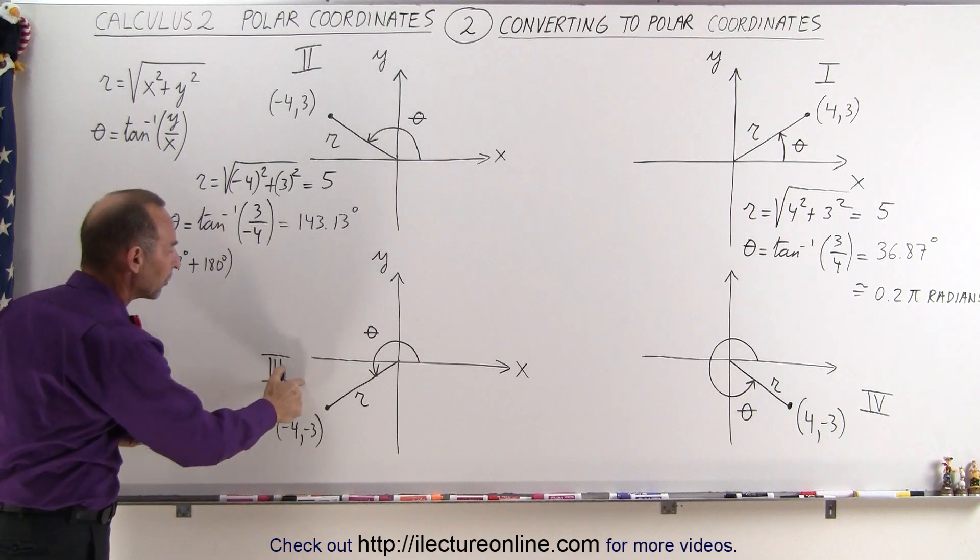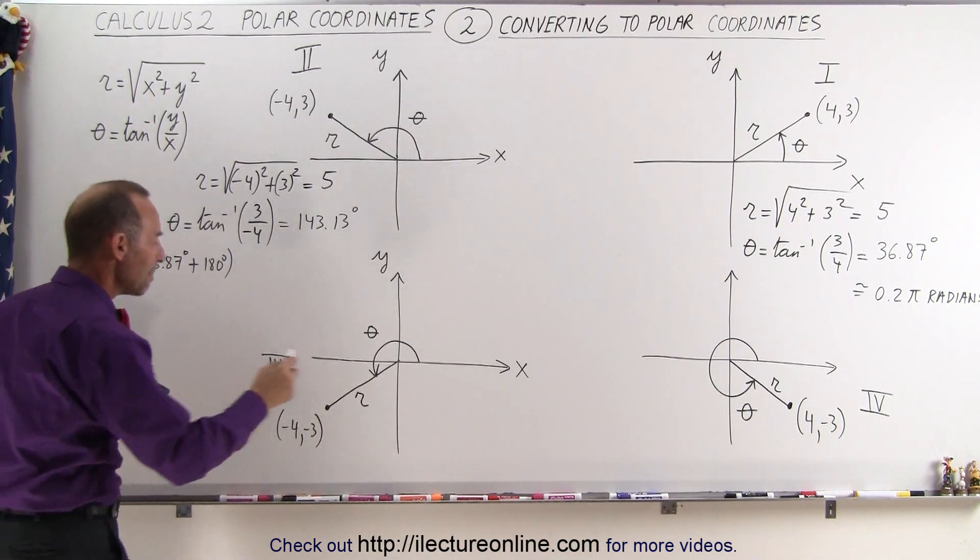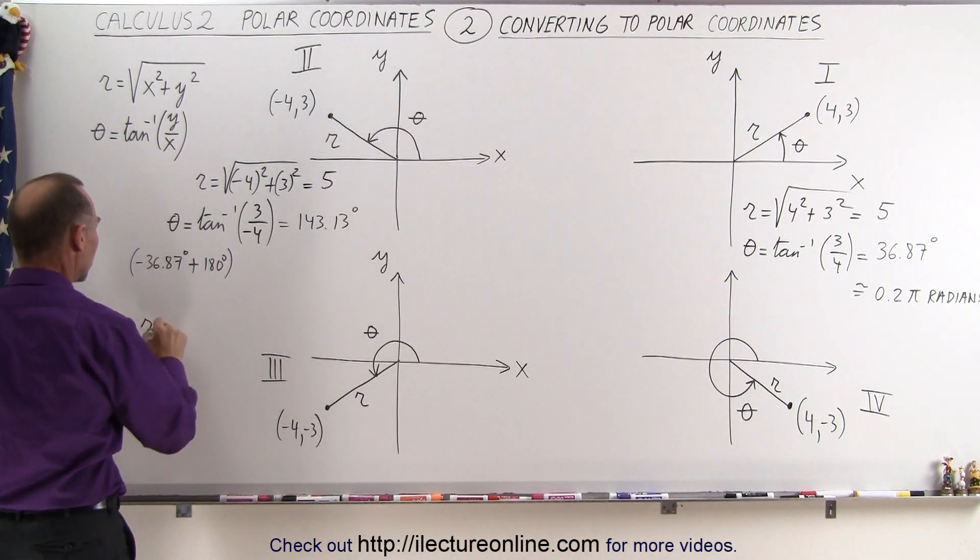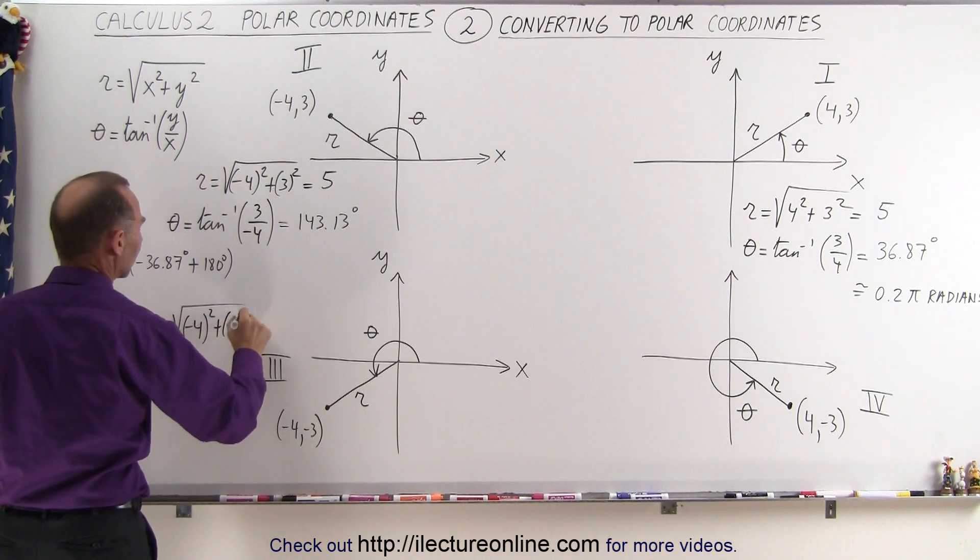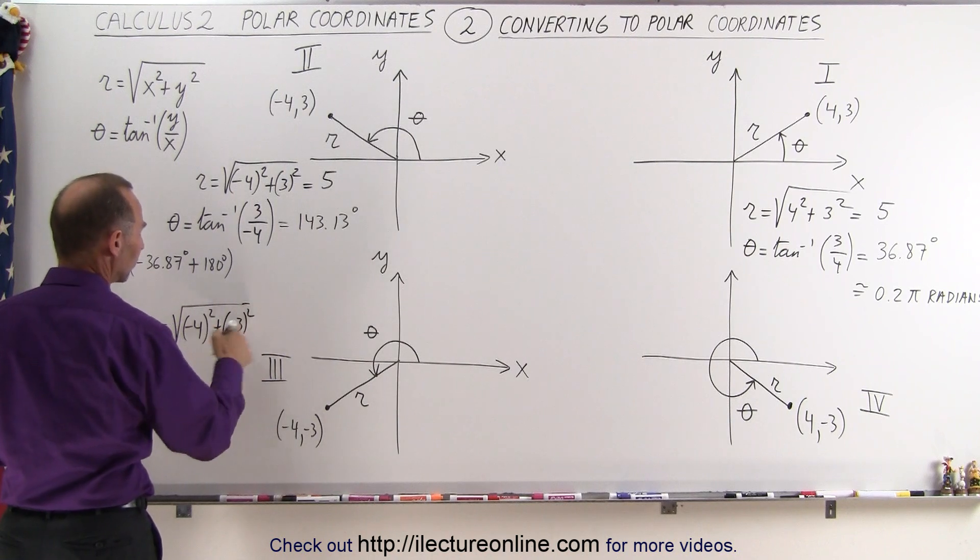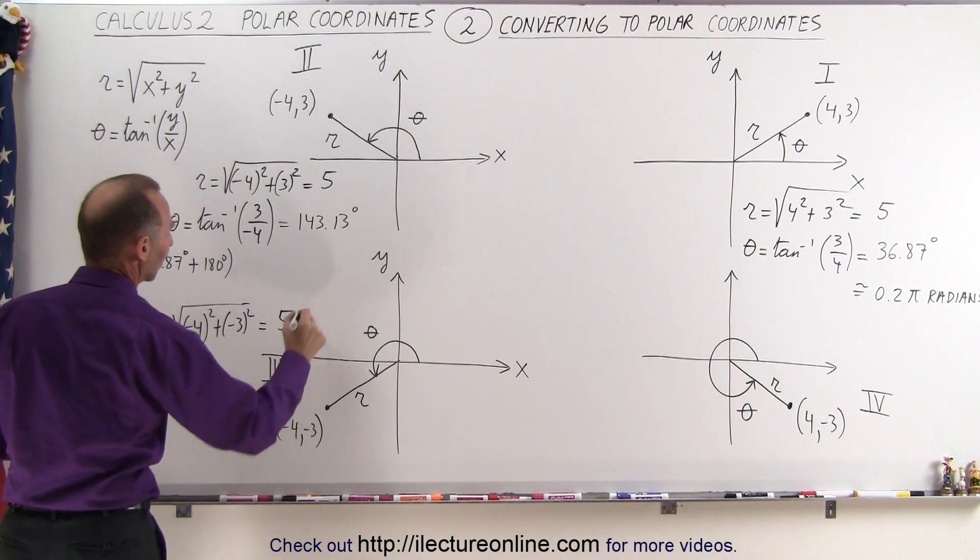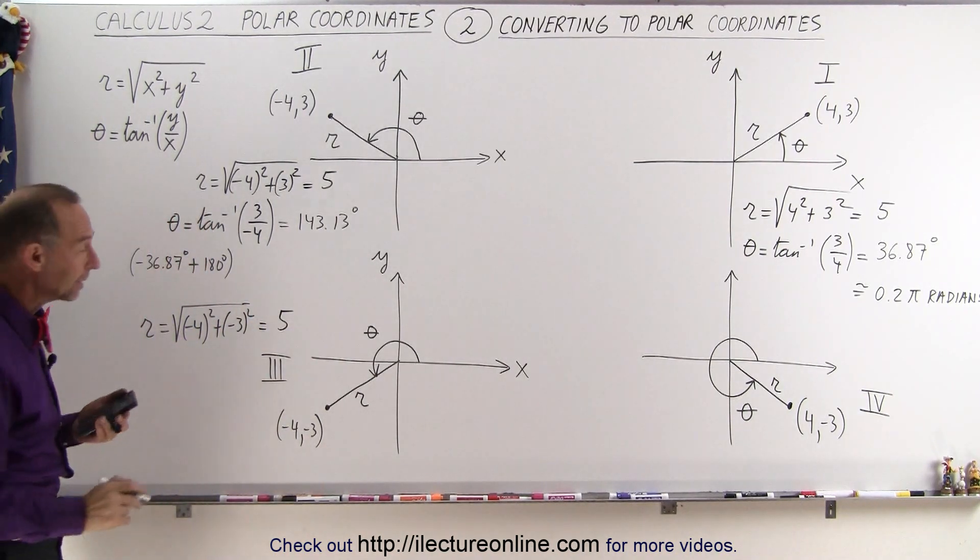Now we go to quadrant 3. Again, to get the magnitude r, we get r is equal to the square root of minus 4 squared plus a minus 3 squared. Again, the squares negate the negative sign, so we get a positive 5. What about the angle?